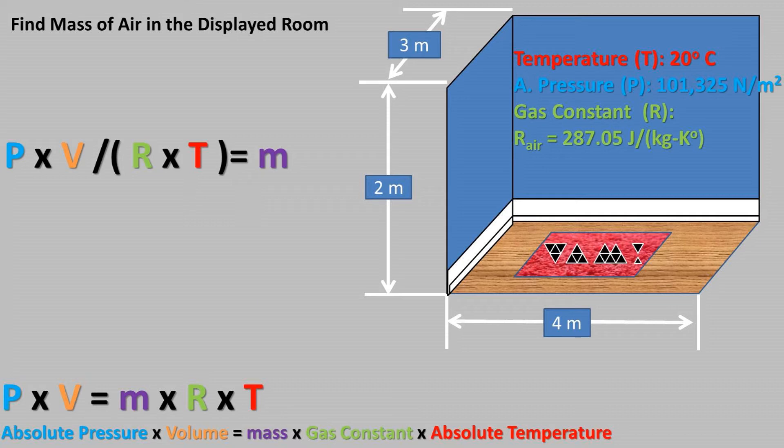Now we must find the values in the correct units to solve this equation. The pressure is zero pascals gauge, or only atmospheric pressure, and is already in pascals, so we do not need to do anything with pressure. To find the volume, we must plug our dimensions into the area of a cube formula of base times width times height. We get a volume of 24 meters cubed of air.